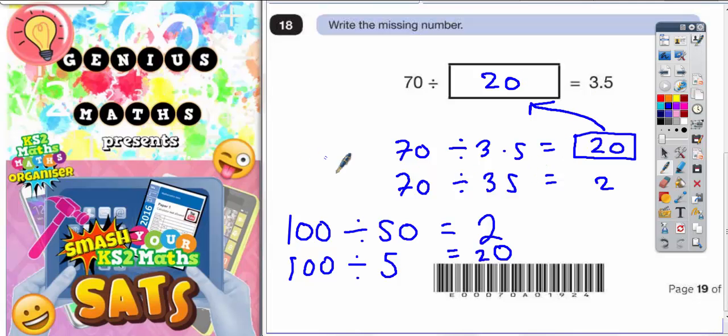And that's the answer. So just remember, when dividing, if you divide by a number that's 10 times smaller, there's going to be 10 times more of them in there.